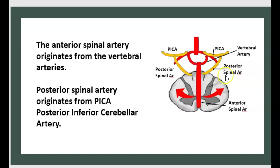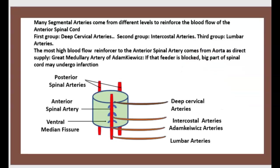The anterior spinal artery originates from the vertebral artery, and the posterior spinal artery originates from the PICA — posterior inferior cerebellar artery. Many segmental arteries come from different levels to reinforce the blood flow of the anterior spinal artery.